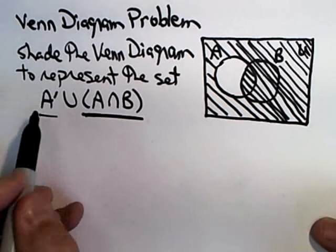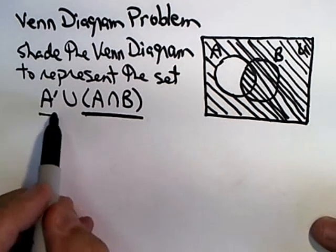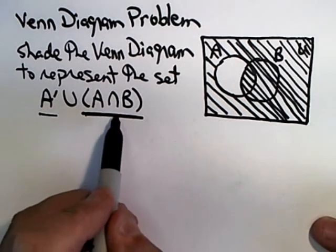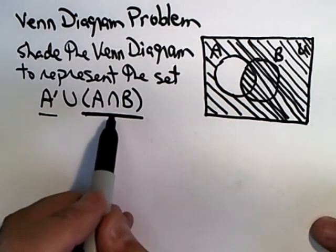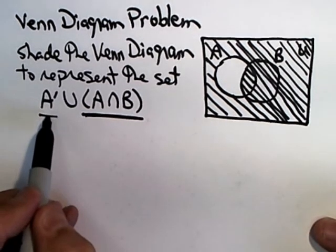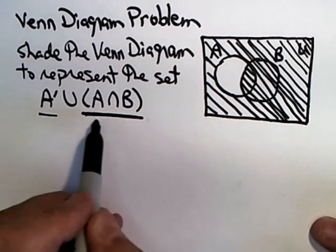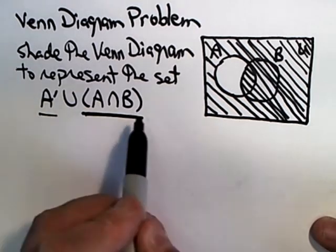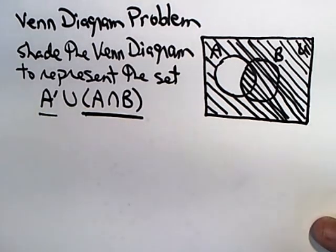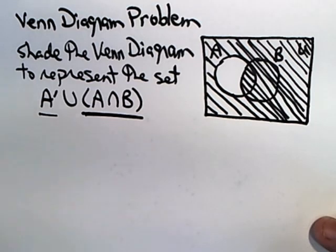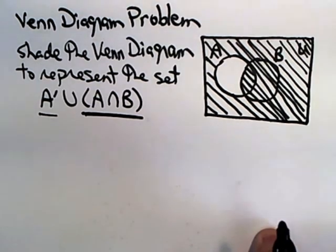So with union, I take anything that gets shaded — either shading in the intersection or shaded by not being in A. Anything that gets shaded because of the union is in the solution set. So that shaded area would be the solution set to this problem.